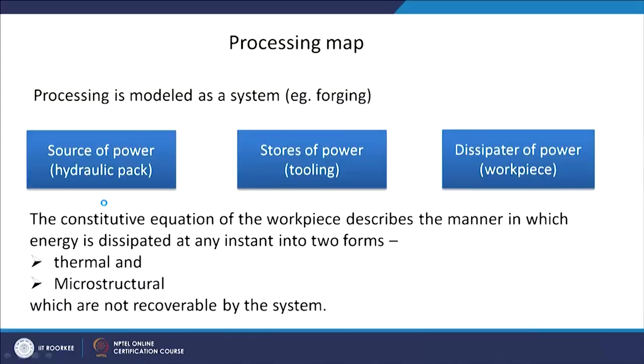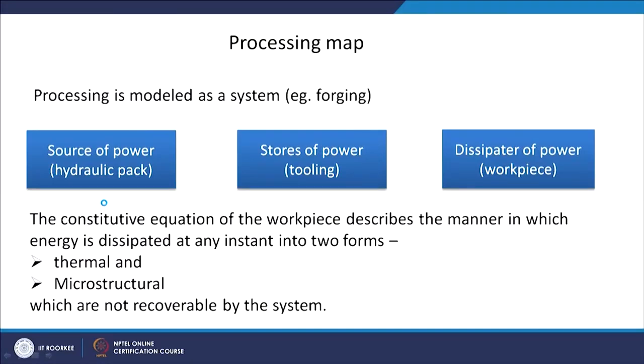Power is supplied by the hydraulic system, stored in the tooling arrangement, and then the press puts that power as input into the work piece, so the work piece acts as a dissipator of that power. The constitutive equation decides how this energy will be dissipated at any instant, and it will be dissipated in two forms. One is the change in microstructure — which involves dynamic recrystallization, dynamic recovery, generation of dislocations, and all those microstructural changes.